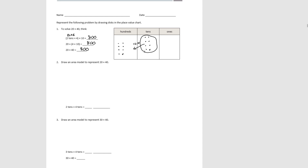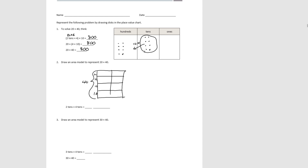Number 2 asks us to show the same problem using an area model. Let's draw our area model. We know that 40 is 4 tens and 20 is 2 tens. If we count, we have 8 hundreds — or 8 hundreds when written in unit form.